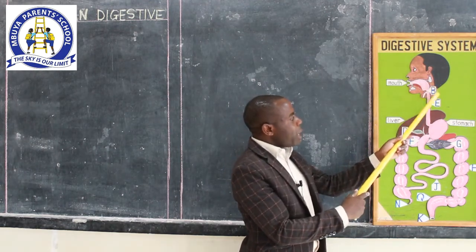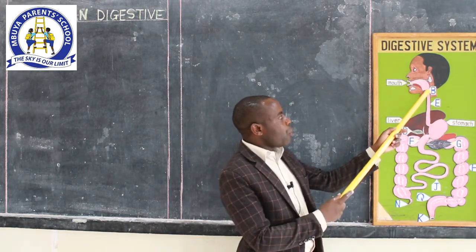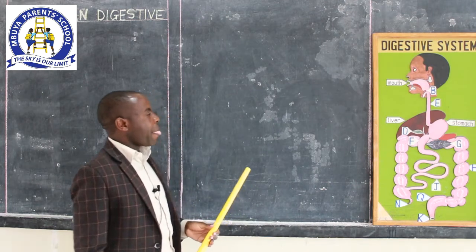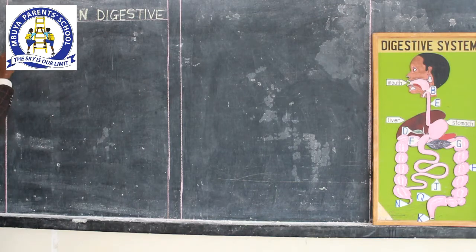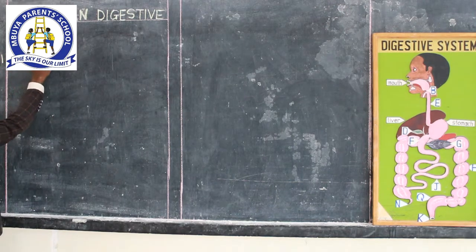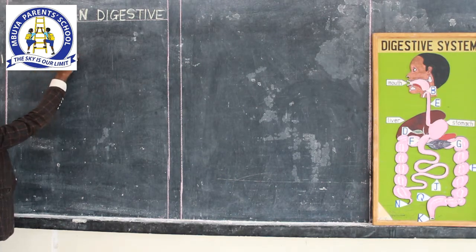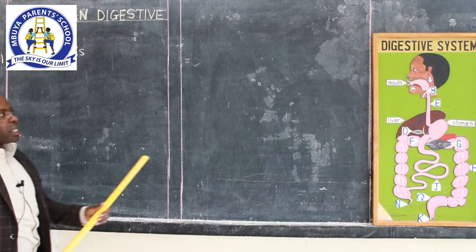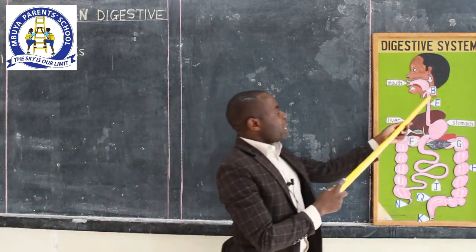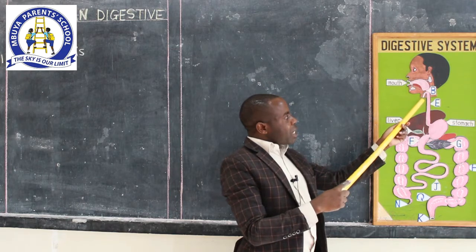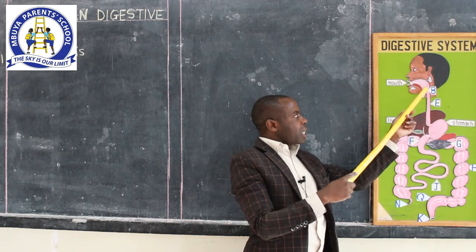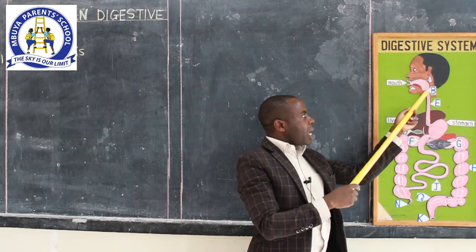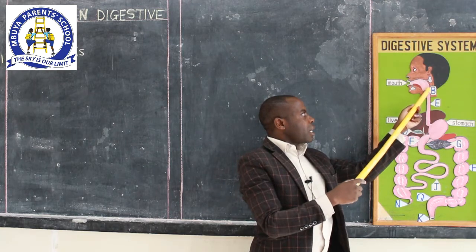When we go to the parts shown here on our model, we have got part B, which is the epiglottis. This part prevents food from going into the air passage when you are swallowing food. If food tries to go that way and reaches the epiglottis, this part comes down and the food cannot continue, which leads to choking.